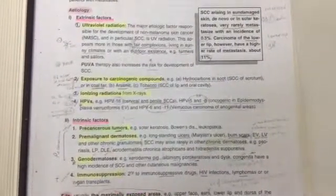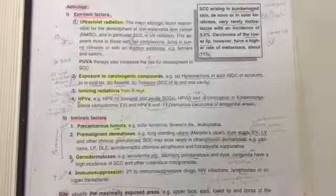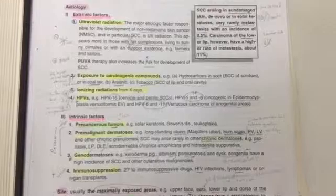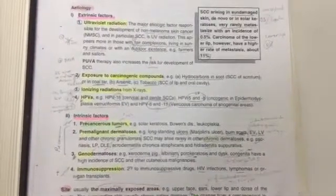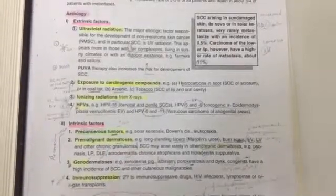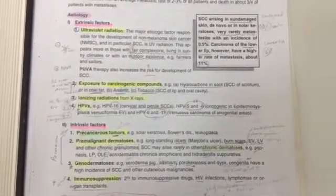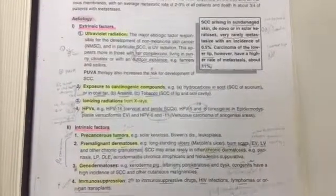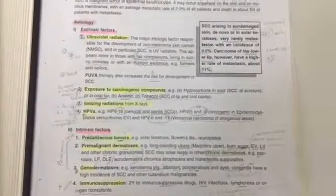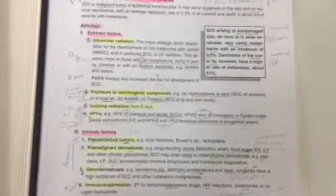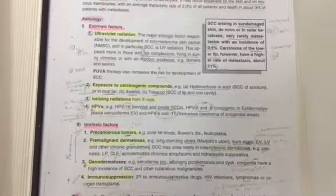The intrinsic factors include precancerous tumors like solar keratosis, Bowen's disease, and leukoplakia. Premalignant dermatoses include long-standing ulcers and burn scars, and diseases like epidermodysplasia verruciformis, lupus vulgaris, other chronic granulomas, and rarely some chronic dermatoses like psoriasis, lichen planus, discoid lupus, acrodermatitis chronica atrophicans, and hidradenitis suppurativa. Genodermatoses like xeroderma pigmentosum, porokeratosis, albinism, and dyskeratosis congenita. Immunosuppression secondary to immunosuppressive drugs, HIV, lymphomas, and organ transplantation.